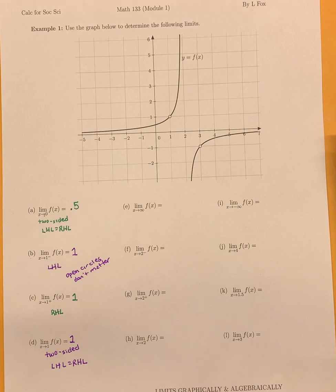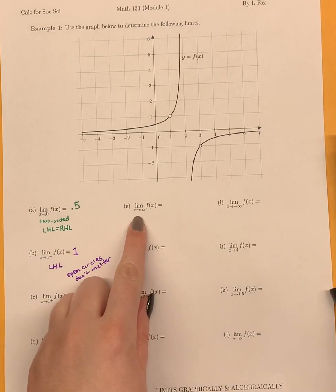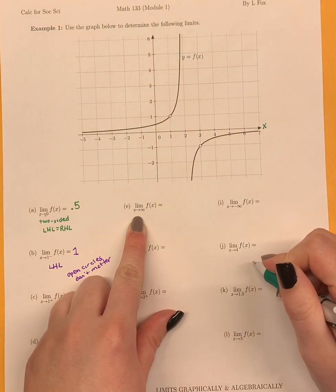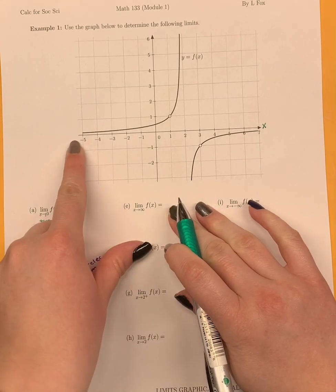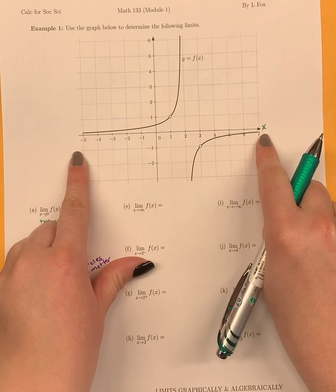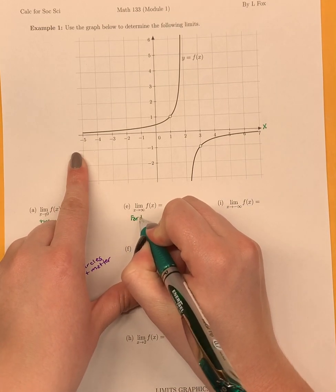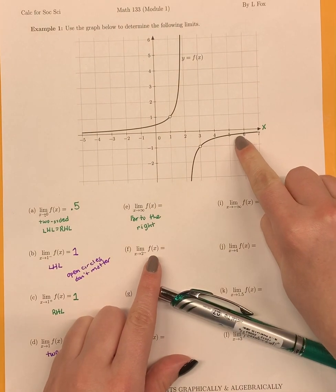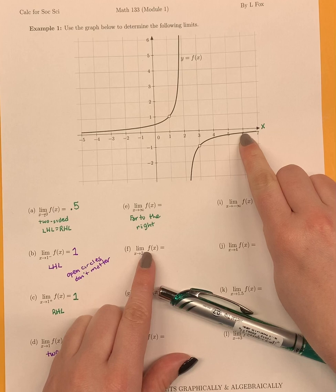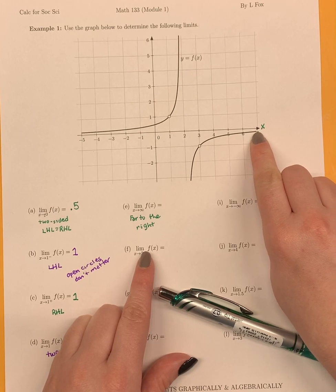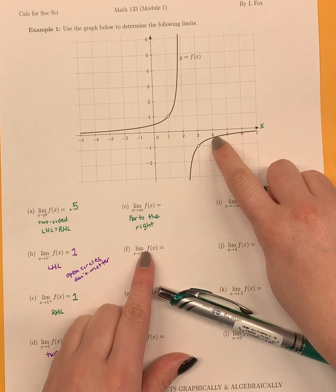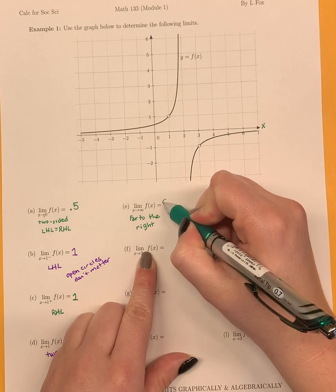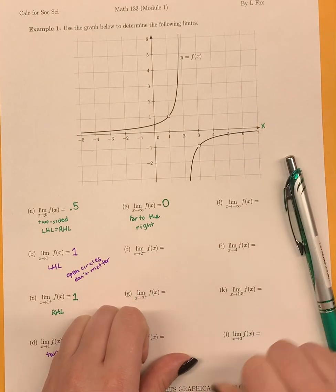Continuing, we have the limit as x goes to infinity. The x values are along the x axis, so x going to positive infinity means we look far out to the right. Starting at maybe x equals 6, the y value looks like about negative 0.2, then negative 0.1. As we go further right it's getting closer to negative 0.3, negative 0.2, negative 0.1 — getting really close to a y value of 0. So the limit as x goes to positive infinity appears to be 0.